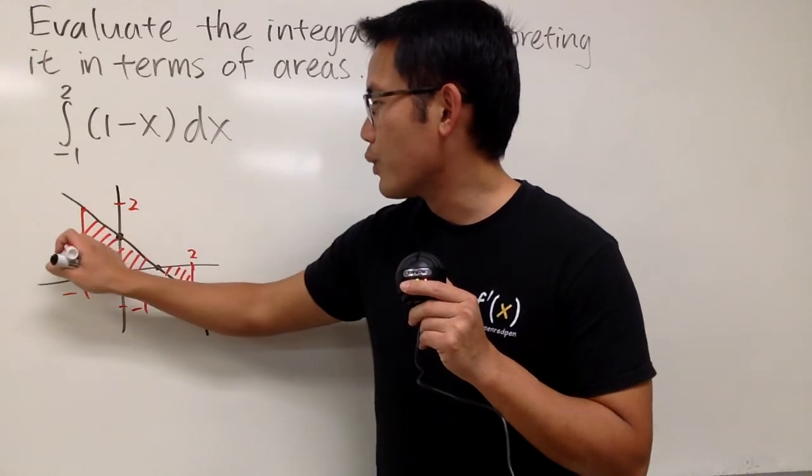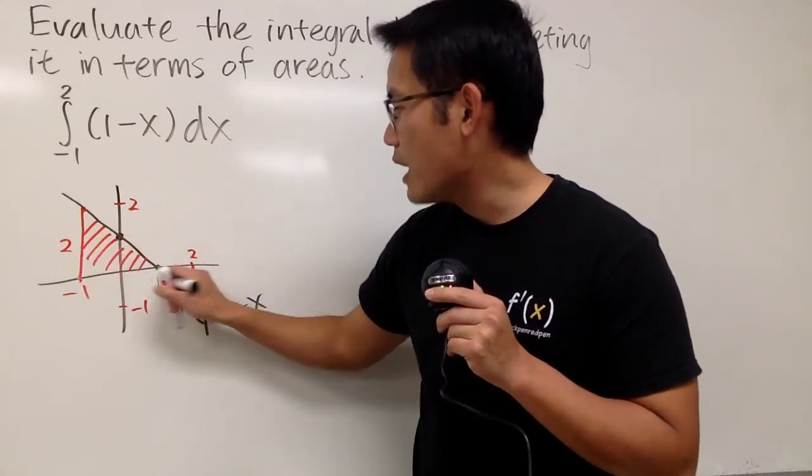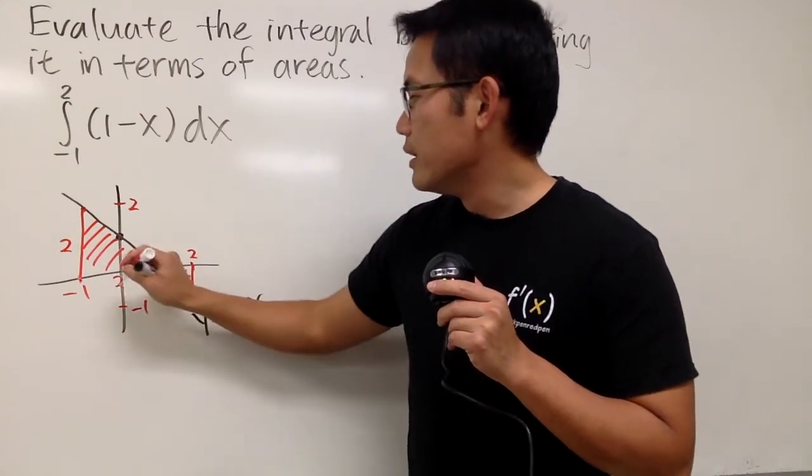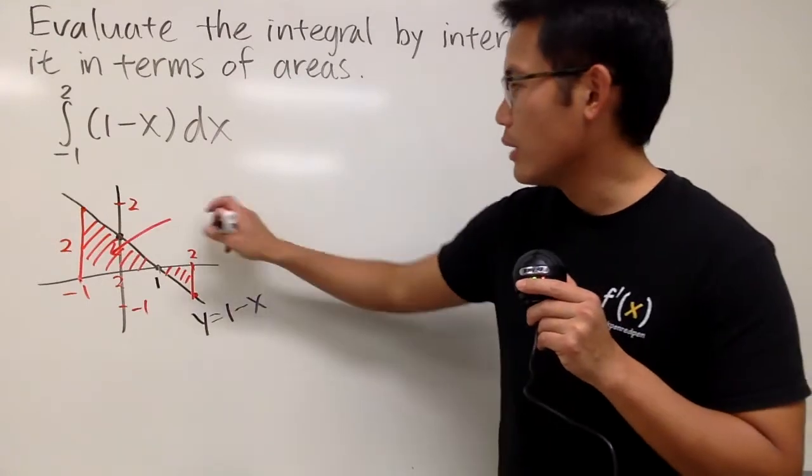So from here to here, of course, this is just 2, and from negative 1, and this right here again is 1, so this right here will be 2. So that means this area, which is just the area of a triangle, I'll just put it down, A1 is equal to 1 half times base, which is 2, times the height, which is 2.